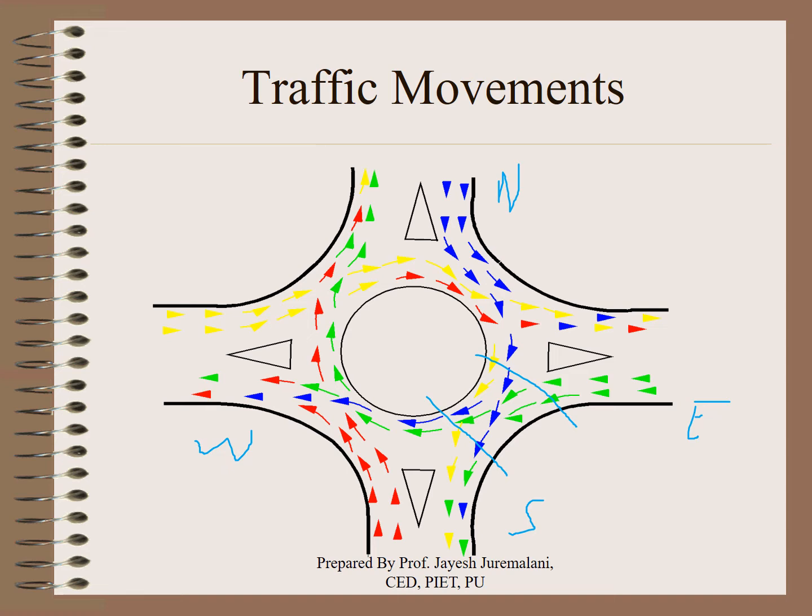Vehicles coming from different directions are merging here. For example, blue arrow vehicles coming from the North are merging with vehicles coming from the East. They go together for some distance and again they diverge out. Vehicles coming from the East and going ahead will merge here and diverge out there. This combination of merging and diverging is known as a weaving action.